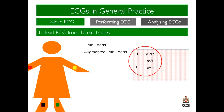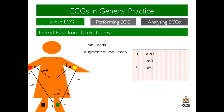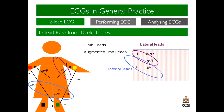Thus, six leads have been created by four electrodes on the skin. It is also worth considering that lead 1 and AVL are called the lateral leads because they reflect the electrical conductance towards the left lateral arm. Leads 2, AVF and 3 are called the inferior leads because they reflect the electrical conductance inferiorly.